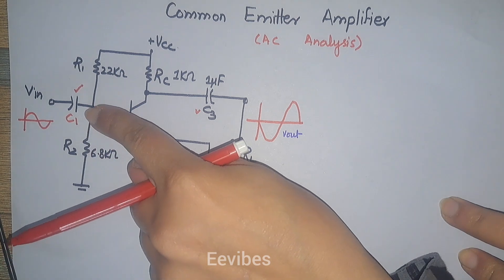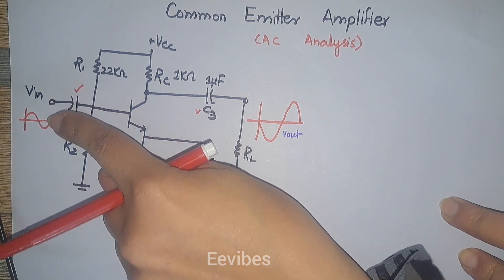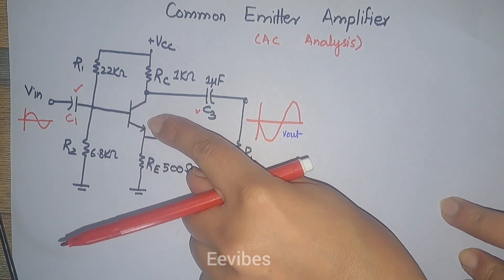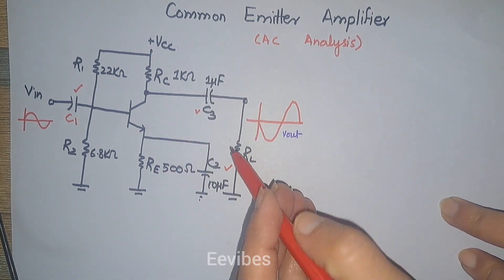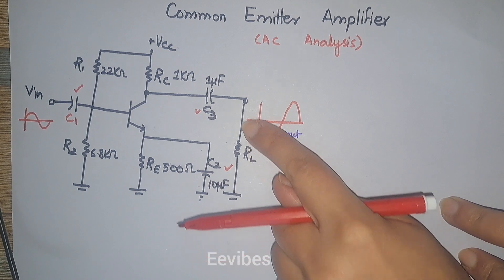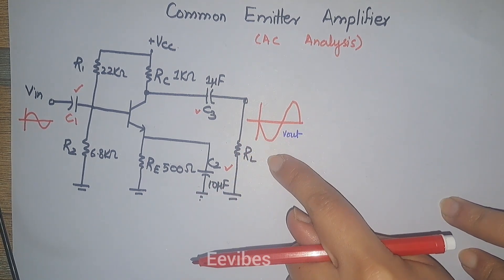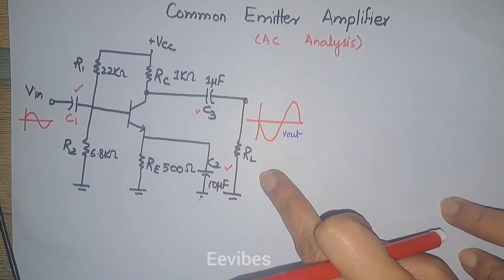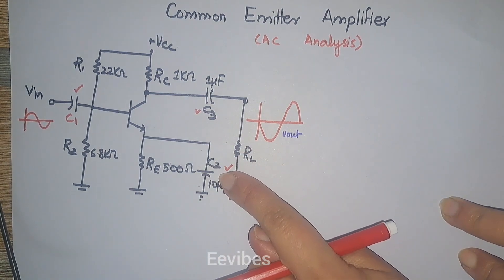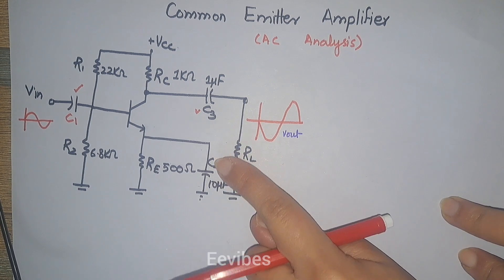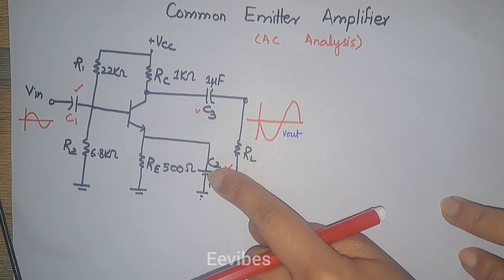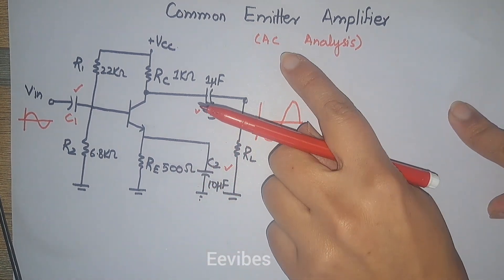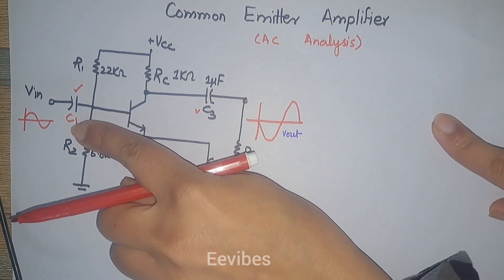The purpose of C1 is to filter out any DC component present in the input circuitry so that it doesn't affect the Q point or biasing point of the transistor. Similarly, C3 ensures that any DC component on the load at the output side doesn't affect the Q point. C1 and C3 serve those purposes, while C2 is also known as the bypass capacitor, which is necessary for improving the voltage gain of this amplifier.